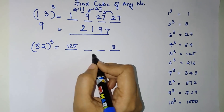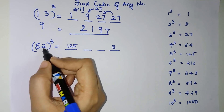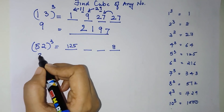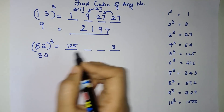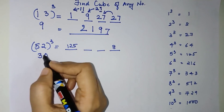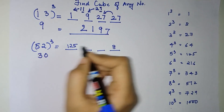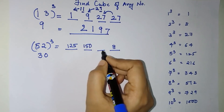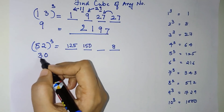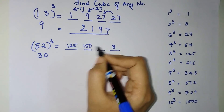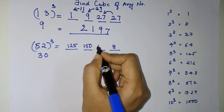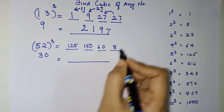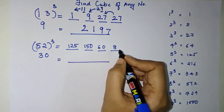For the middle two parts, we find the common multiple: 5 × 2 = 10, and 10 × 3 = 30. For the second part, multiply 30 by the first number: 30 × 5 = 150. For the third part, multiply 30 by the last number: 30 × 2 = 60.